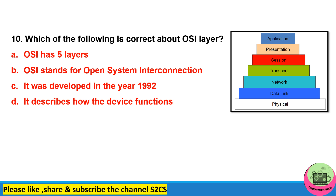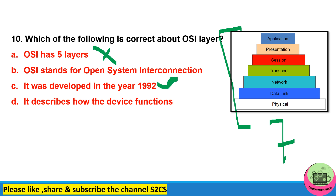Question 10: which of the following is correct about the OSI layer? OSI has five layers — no, from the figure itself you can see it has seven layers. It was developed in 1992 — no, it was developed in 1984. It describes how the device functions — no, it describes how the network works. So the answer is B: OSI stands for Open System Interconnection.